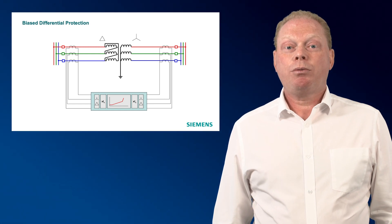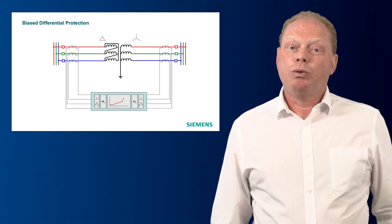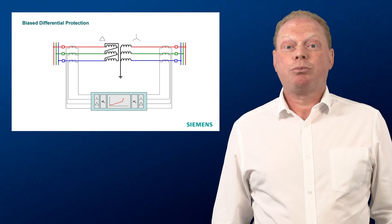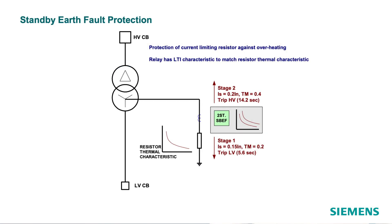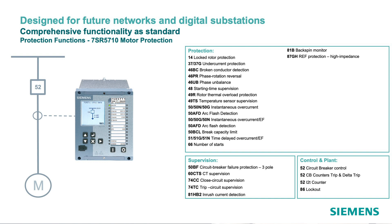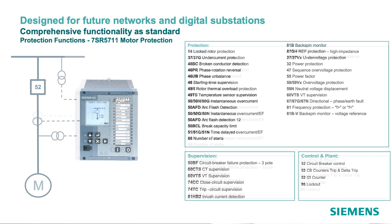The RARO5 also includes current transformer magnitude and vector group correction which allows different current transformers to be used and enables the product to be applied to all transformer types. Earth faults in a transformer can cause significant damage and the 7SR54 includes instantaneous earth fault protection which can be configured as high impedance restricted earth fault with additional external components, or low impedance restricted earth fault. Where the transformer is earthed through a resistor to limit the earth fault current, the RARO5 includes a standby earth fault function which has a characteristic matching the resistor thermal curve. To complete the range for applications on distributed networks and industrial sites, the RARO5 includes motor protection devices with specific functions to protect the motor from damage.